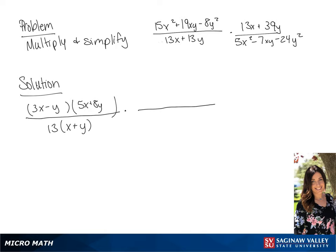We're going to factor this numerator of the second fraction, so we have 13 times x plus 3y. In the denominator, we are going to have 5x plus 8y times x minus 3y.